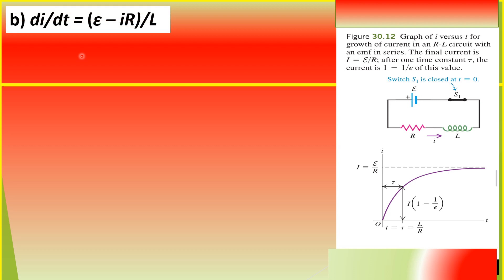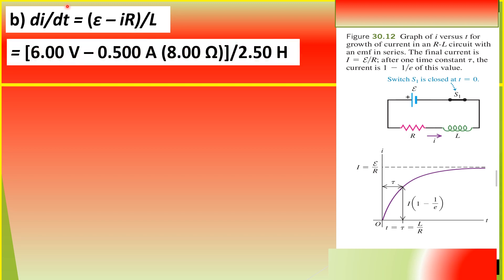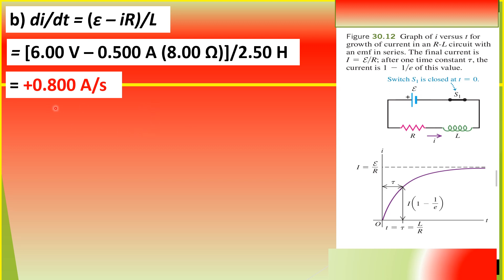Our solution to question B — finding the rate of increase of the current at the instant when the current is equal to 0.500 amperes — we use the formula: epsilon minus IR, divided by the inductance L. Substituting: 6.00 volts minus 0.500 amperes multiplied by 8.00 ohms, all over 2.50 henry. The rate of increase in current at that instant is equal to 0.800 amperes per second.